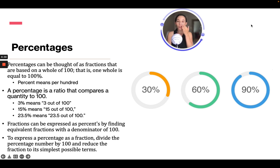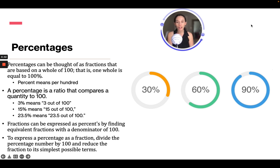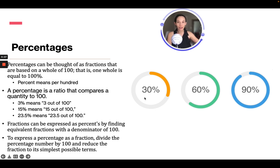Fractions can be expressed as a percentage by finding equivalent fractions with a denominator of 100. To express a percentage as a fraction, divide the percentage number by 100 and reduce to simplest terms. So 30% is 30% of the whole circle, which would be 100. 60% is 60% of the whole circle. And 90% is almost the full circle. We can think of these as 30 out of 100, 60 out of 100, and 90 out of 100.